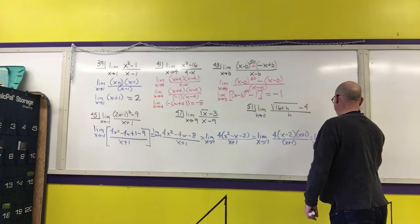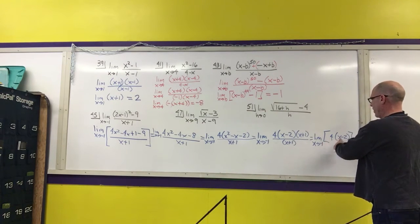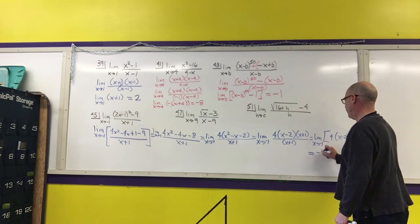I can now simplify, which is going to give me the limit as x approaches negative 1 of 4 times x minus 2. I am now at the point where I can take the limit by putting a negative 1 in here. Negative 1 minus 2 is negative 3. Negative 3 times 4 is negative 12.